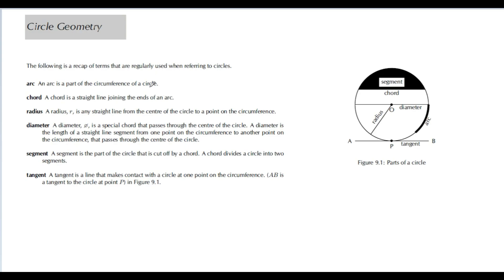Okay, so term number one: an arc. An arc is a part of the circumference of a circle. I have the diagram over here to the right-hand side. The arc can refer to any part of the circumference — if I highlight this bit over here, that will be an arc; this will be an arc; that will be an arc.